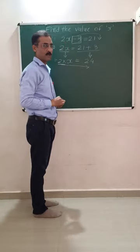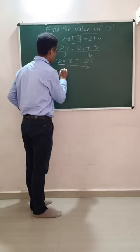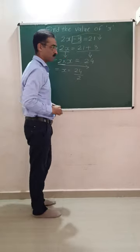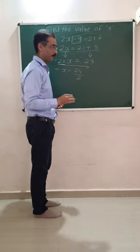On the right hand side, we use division form. So x is equal to 24 divided by 2. Now we reduce 24 divided by 2.